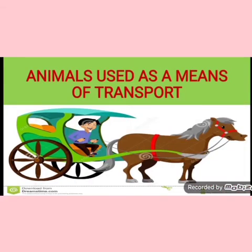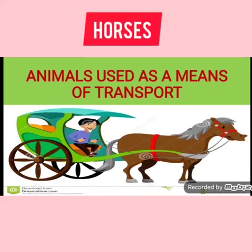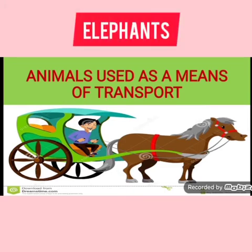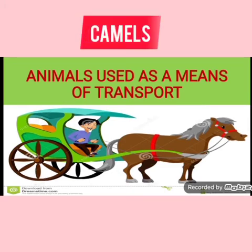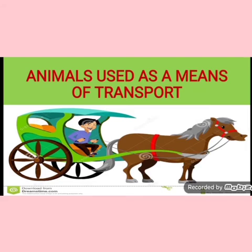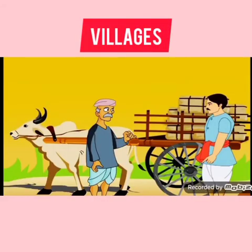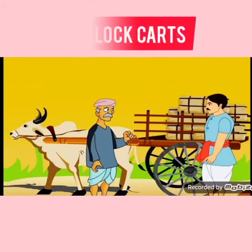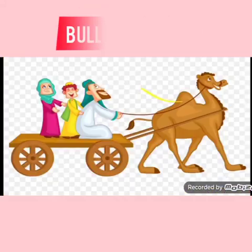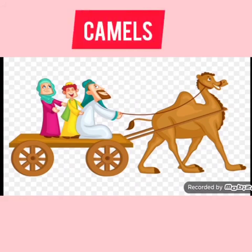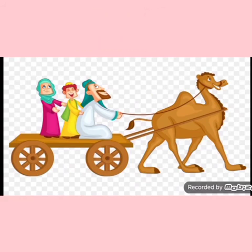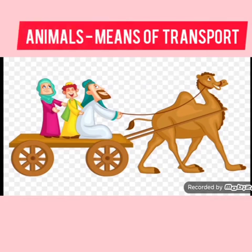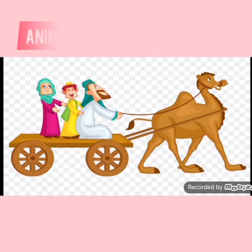Now children, let's see animals used as a means of transport. Bullock carts, horses, mules, elephants, and camels were used as a means of transport. In villages, people use tractors, tongas, bicycles, and bullock carts mostly. Camels are found in desert areas. So these are the animals which are used as a means of transport.